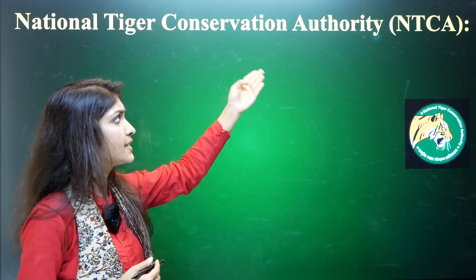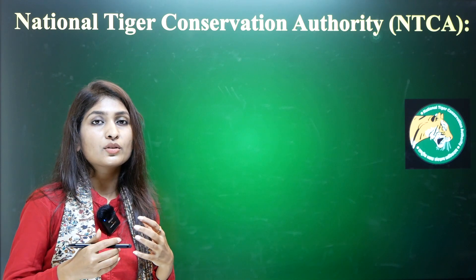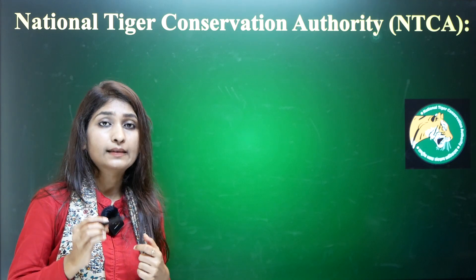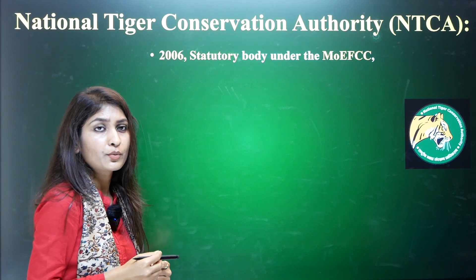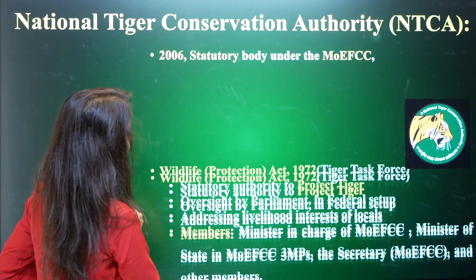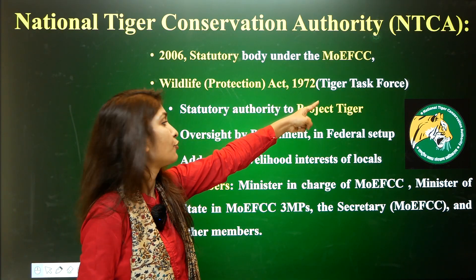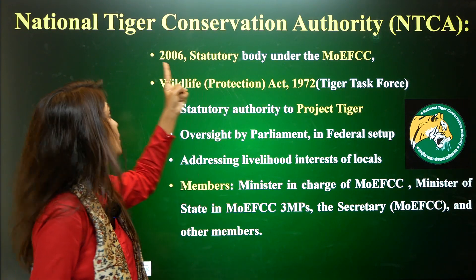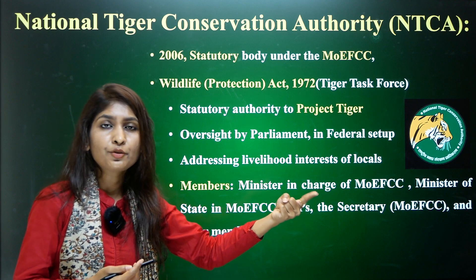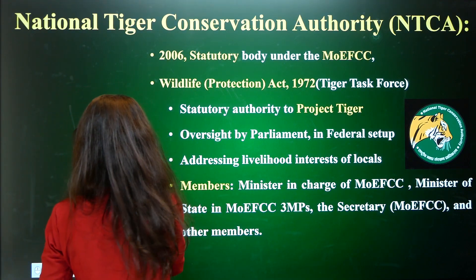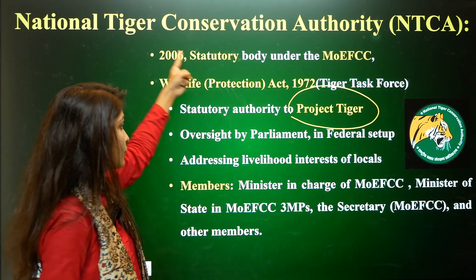The National Tiger Conservation Authority (NTCA) was set up in 2006 as a statutory body under the Ministry of Environment, under the Wildlife Protection Act of 1972 (as amended), based on the recommendation of the tiger task force. The objective of NTCA is to give legal sanctity for the conservation directives undertaken by Project Tiger, and to provide oversight by Parliament.